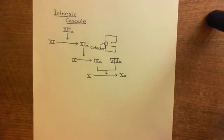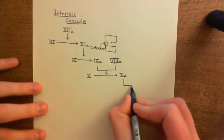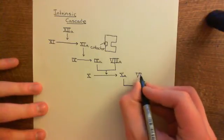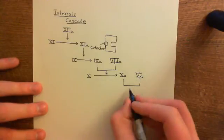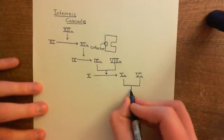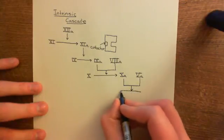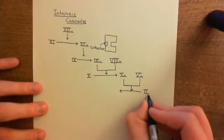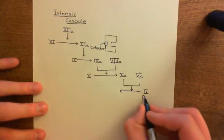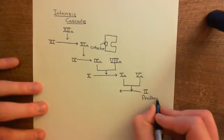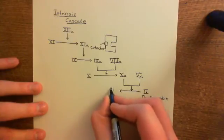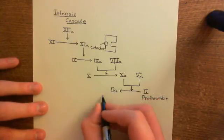Factor 10a also has a cofactor — it requires another protein to bind to it before it will be an active enzyme. The cofactor for factor 10a is factor 5a. Factor 10a and factor 5a bind together to make an active enzyme which will then convert factor 2, also called prothrombin, into factor 2a, which has another name: thrombin. This is the overall result of the intrinsic coagulation cascade — you activate thrombin.